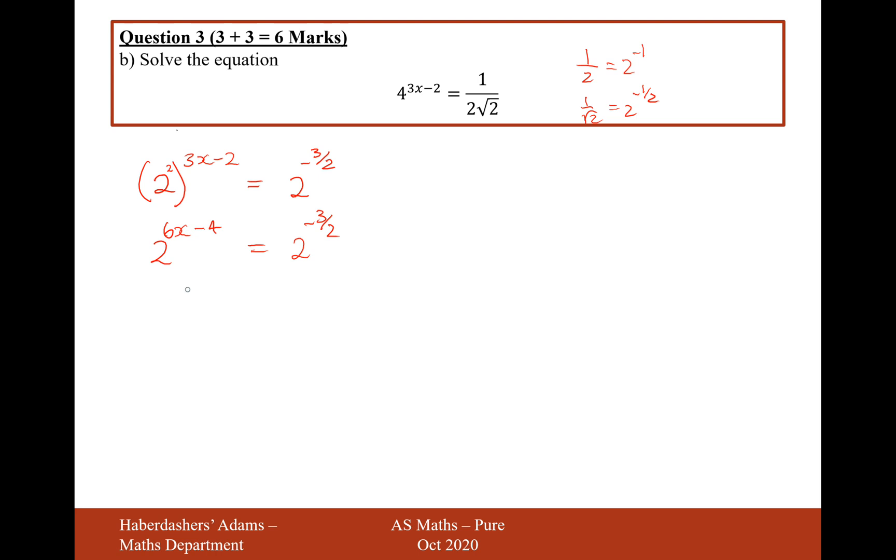Now what we'll do is equate. Now that we've got the same bases, this question here was really important that you've got the same bases, now we can set the indices equal to each other, so 6x - 4 = -3/2. 6x would therefore equal 5/2, so divide by the 6 and you get 5/12.